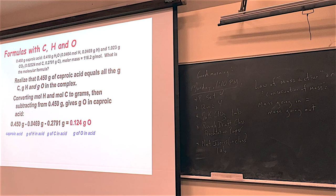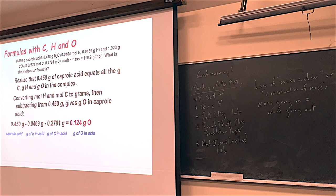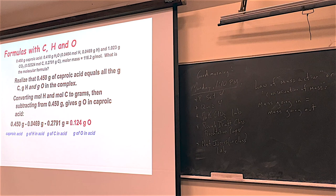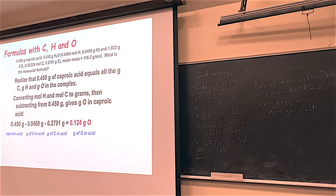So in this example, we found the grams of CO2 and grams of water, turned them into moles, turned them into moles of C and H, and then turned those into grams of C and grams of H. We subtract those from the total sample — 0.450 grams — to get the grams of oxygen in this caproic acid sample. Any questions on that? The slides are on the website and also in the companion. There's a lot of things to write down, so I do recommend looking there.